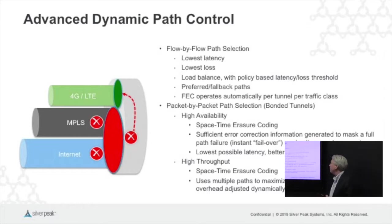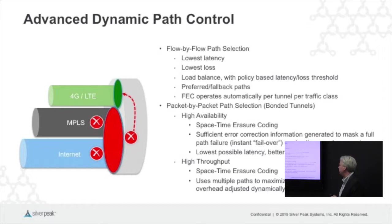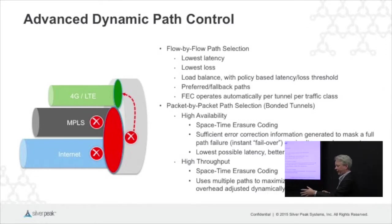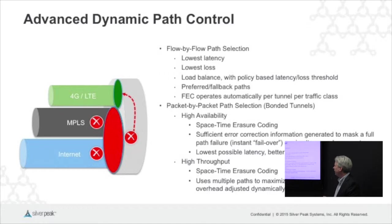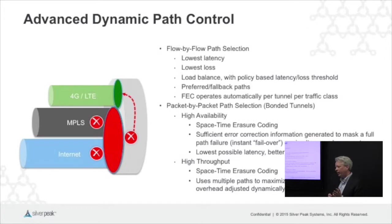The other setting for the tunnels is what we call high throughput. This also uses space-time erasure coding and uses multiple paths to maximize throughput — but we're trying to use the paths to get more capacity rather than better availability. So if we had a 10 megabit MPLS path and a 20 megabit per second internet path, we're creating an effective tunnel of 30 megabits per second. A single flow will see the aggregate capacity of that link. As with the existing technology, we can adjust the error correction overhead based on the loss we're seeing — if there's no loss, there's no overhead, and as loss creeps up, we move to higher-order erasure codes to compensate.